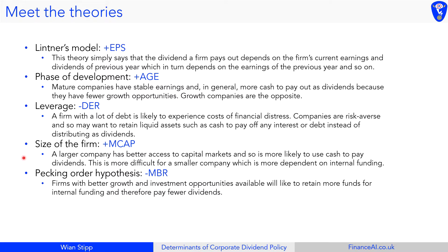The next theory is size of the firm — that market capitalization is a determinant of dividend policy. Market capitalization is just the price per share times the number of outstanding shares. A larger company with a high market cap has better access to capital markets and is therefore more likely to use cash to pay dividends. A smaller company doesn't have the same access to capital markets, so it tends to retain cash for positive NPV projects, whereas a larger company can pay dividends and then borrow or get equity funding if needed.